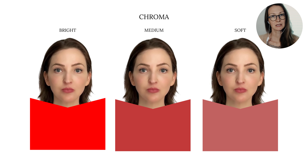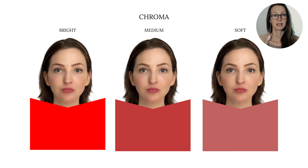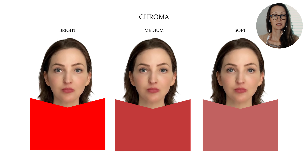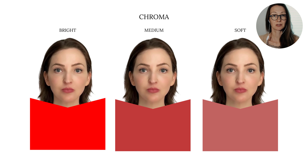The first step in the analysis is to look at her chroma — is she bright, medium or soft? As you can clearly see, she is not bright, as the bright colors are way too overpowering. There is a lot of distance between the color and her, so it's not a wearable chroma for her.